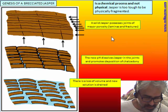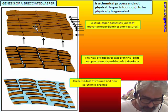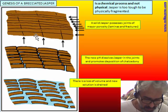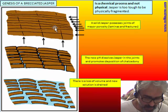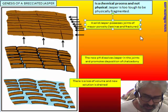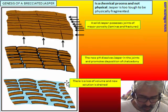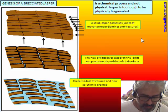We can reconstruct the genesis of a brecciated jasper from a laminated brecciated jasper as follows: a normal jasper has joints of major porosity — the joints between laminas and fractures. Water solution enters these joints, dissolves jasper, and deposits chalcedony. This is a chemical process, not physical. Everyone who has cut and worked with jasper knows it is quite impossible to physically destroy it — even with a big hammer you can break a jasper but not crush it. So if you find jasper that is crushed into tiny pieces, the chemical process is the only explanation.